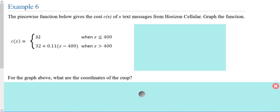So when we graph this, for $32, it's going to be flat because our cost doesn't change for any text messages in between that amount up to 400 messages.